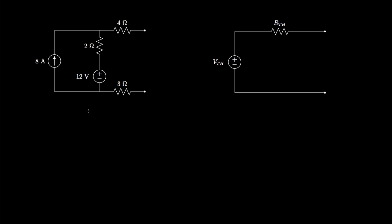Because the Thevenin Theorem tells us that these two circuits are equivalent for any external circuits attached to the right of their terminals, we can determine the Thevenin voltage and the Thevenin resistance by examining these circuits in two extreme situations. For the first situation, we'll look at the voltage between the terminals when the terminals are left open, and we'll label that voltage as VOC, or the open circuit voltage.